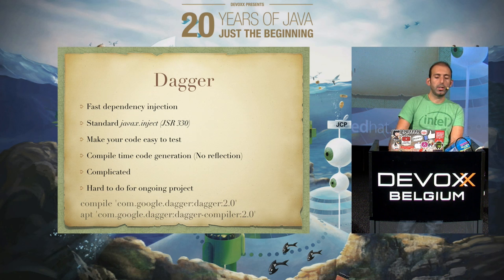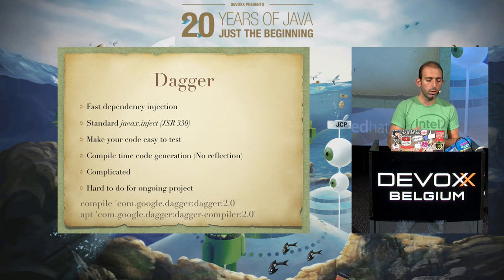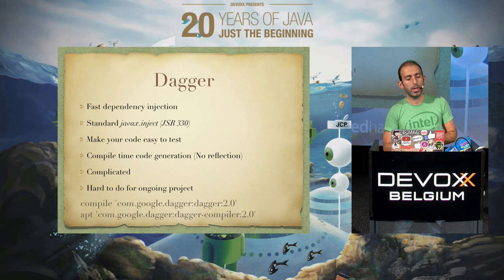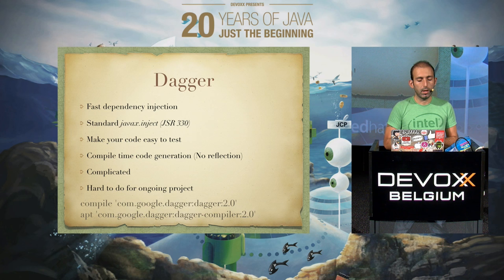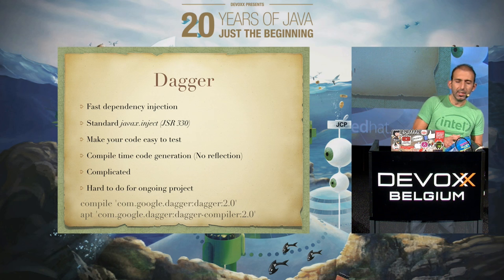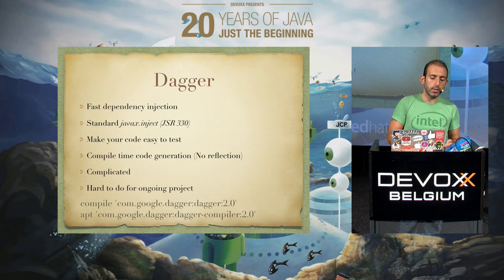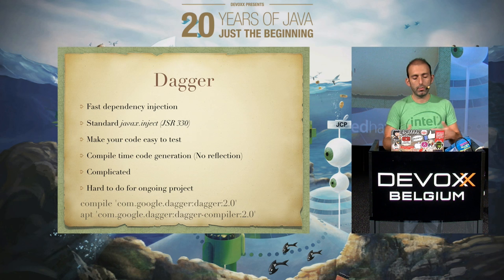Another framework which does almost the same job is Dagger. It's again dependency injection, based on javax.inject, so it may be more familiar if you're coming from a Java background. It lets you test your code easily. Like ButterKnife, this also doesn't do any reflection — it's compile-time code generation. It's a bit more complicated than ButterKnife, and it might be harder to integrate Dagger into an ongoing project, unlike ButterKnife which is cleaner in terms of integration.